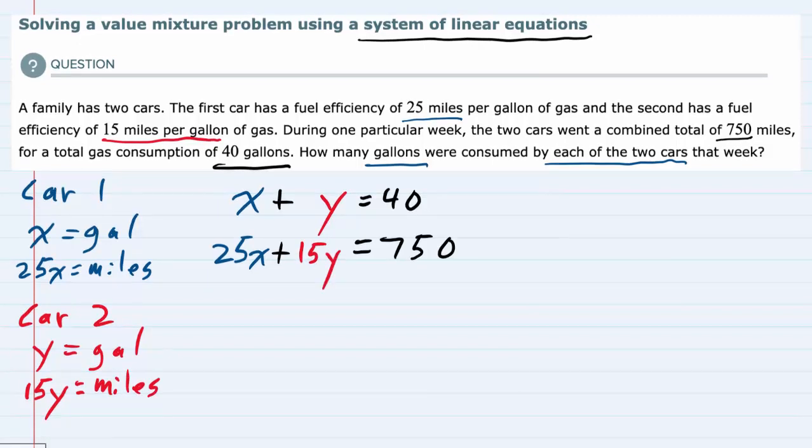To reiterate, in the first equation, we have the total number of gallons is 40. In the second equation, 25x + 15y = 750, we use the total number of miles. Now that we have our two equations, we can solve the system with either elimination or substitution.